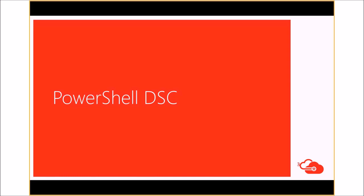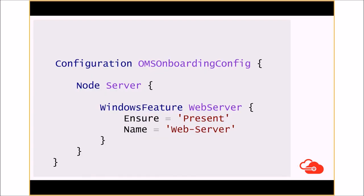Let's get started with what PowerShell Desired State Configuration is. As you can see on the slide, it looks like PowerShell — it has a 'configuration' keyword, a title, and curly braces defining our nodes and features we'd like installed. Configurations allow you to define, via PowerShell syntax, the desired state of your environment in a declarative way. This is opposed to using PowerShell scripts, which is basically an imperative way of defining how you want your server to look.